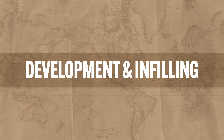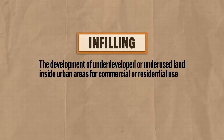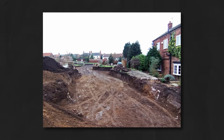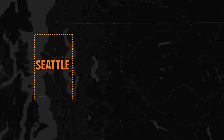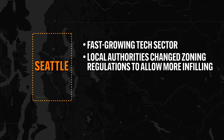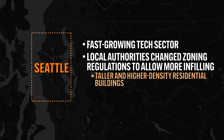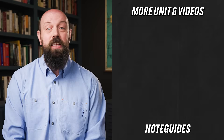Third, the spatial development of cities reflects cycles of development and infilling. Infilling refers to the development of underdeveloped or underused land inside urban areas for commercial or residential use. Inside a city, land is always a limited and valuable commodity, so if a piece of land isn't being used to its full potential, local governments will figure out a way to use it better. For example, a city may demolish a parking lot and build high-density residential buildings or commercial sites. A good concrete example is Seattle, Washington. Over the last couple of decades, Seattle's technology sector has been growing rapidly, so local authorities changed zoning regulations to allow more infilling in the form of taller, higher-density residential buildings to house all the people rushing to Seattle for tech jobs. As a result, unused or underdeveloped urban space is made more useful, and infilling also helps contain uncontrolled sprawl.